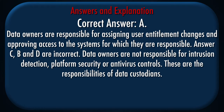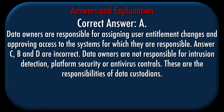Correct answer: A. Explanation: Data owners are responsible for assigning user entitlement changes and approving access to the systems for which they are responsible. Answers C, B, and D are incorrect. Data owners are not responsible for intrusion detection, platform security, or antivirus controls. These are the responsibilities of data custodians.